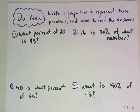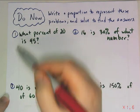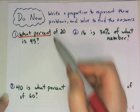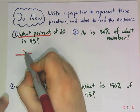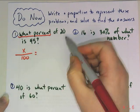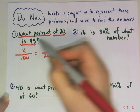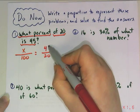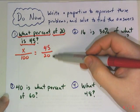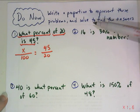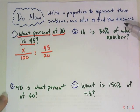So when we look at number one, what percent of 20 is 45? I see 'what percent'. So I know the missing part is the percent over 100. Of 20. That means 20 is my whole. Is 45. So 45 is the part. This time, my part is larger than my whole. But with my clue words, I know I have everything in the right place.